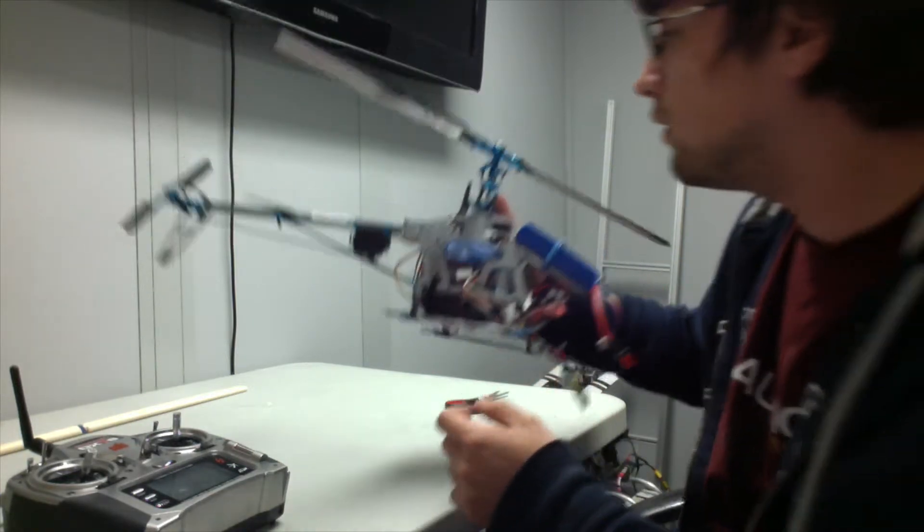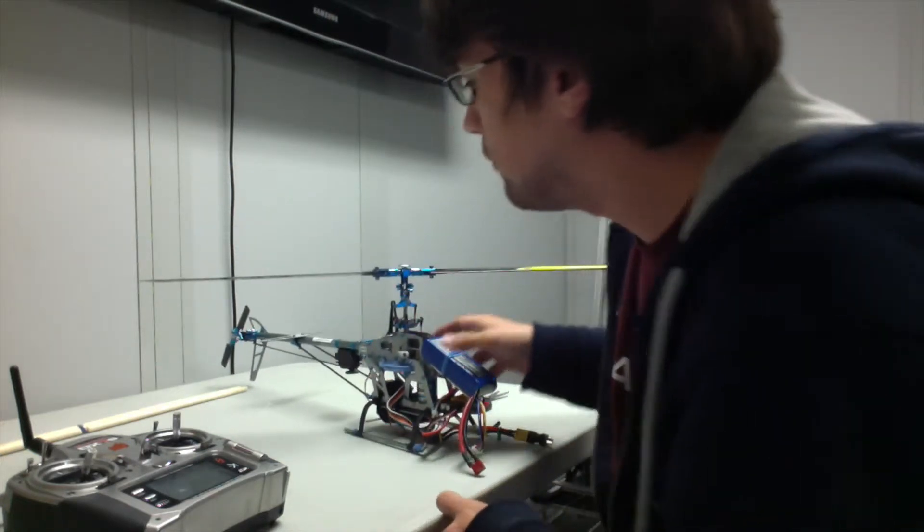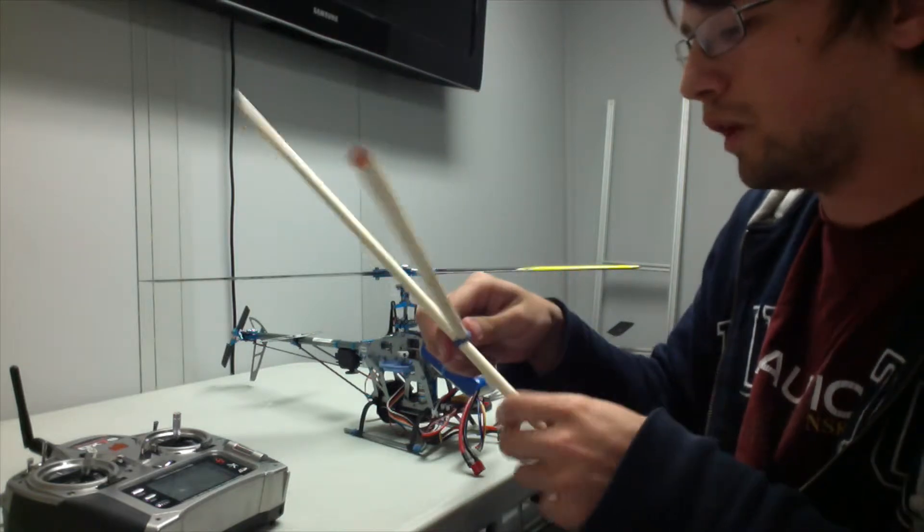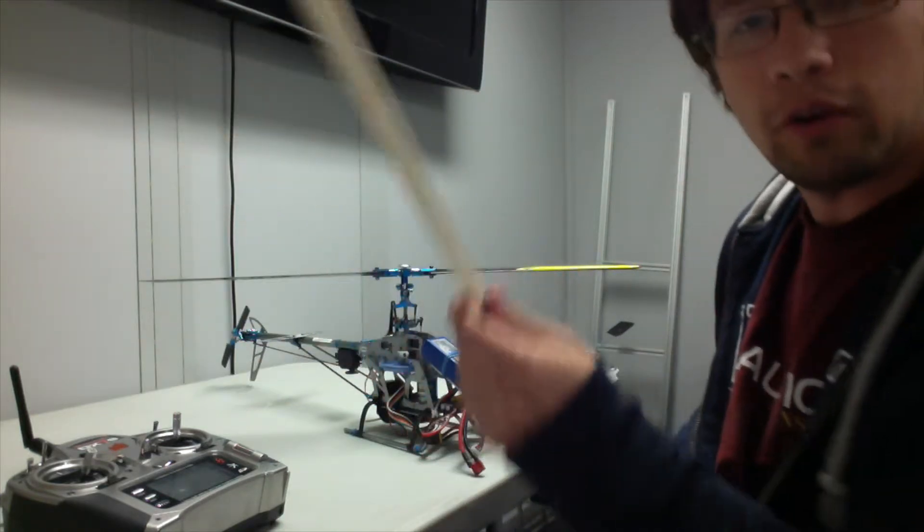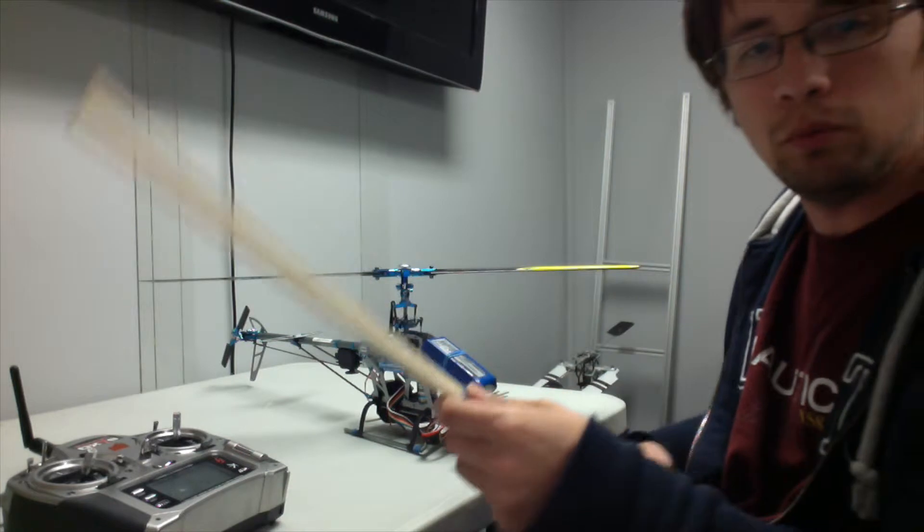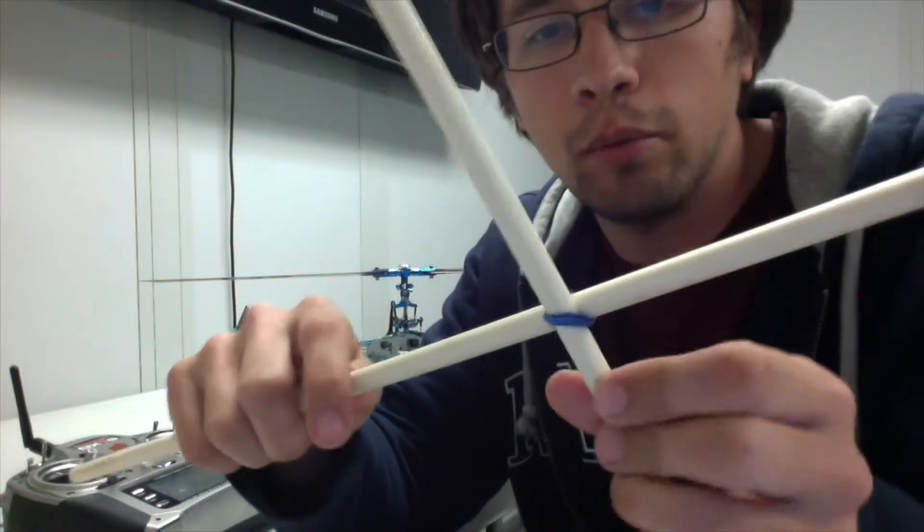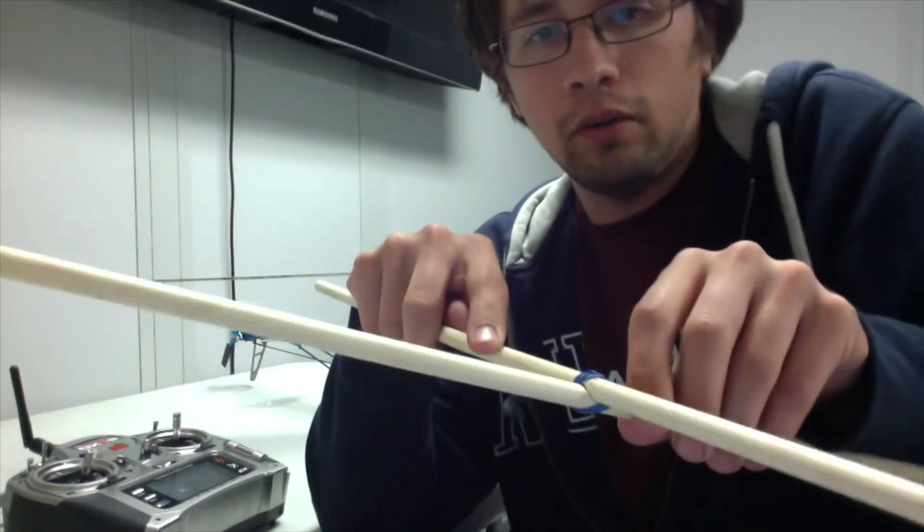After you do that, for testing, you're going to want to make sort of training wheels for your helicopter. What you can do is take two wooden dowels like this. I cut a notch in them like this and put a rubber band so they fit together nicely.